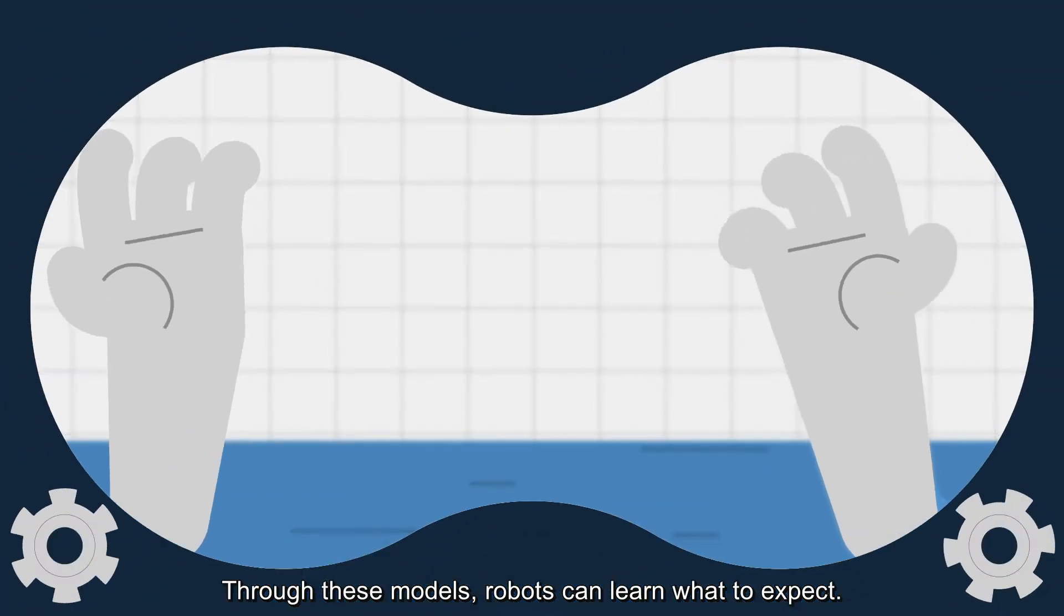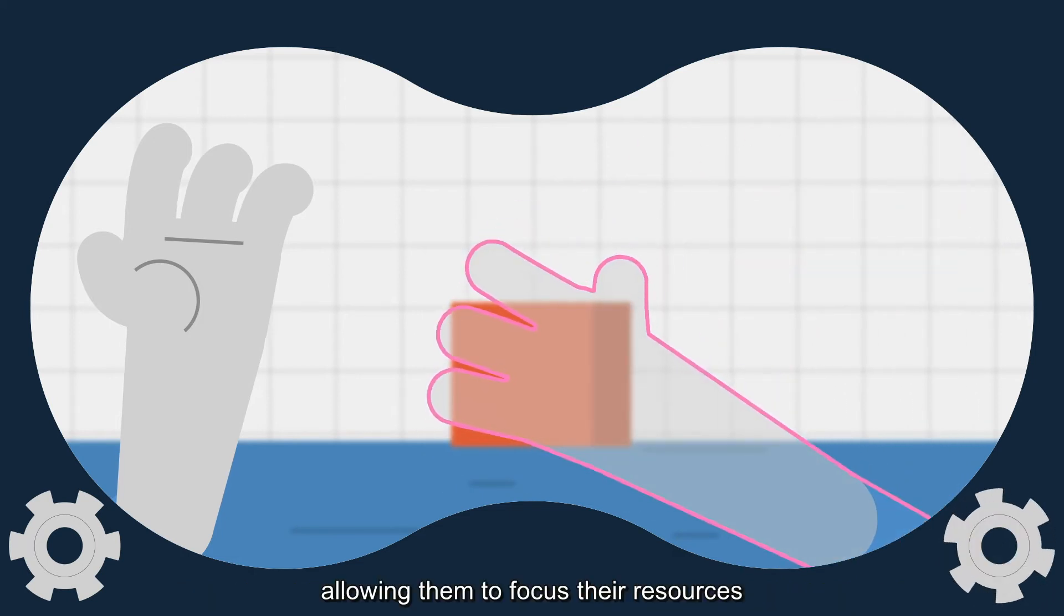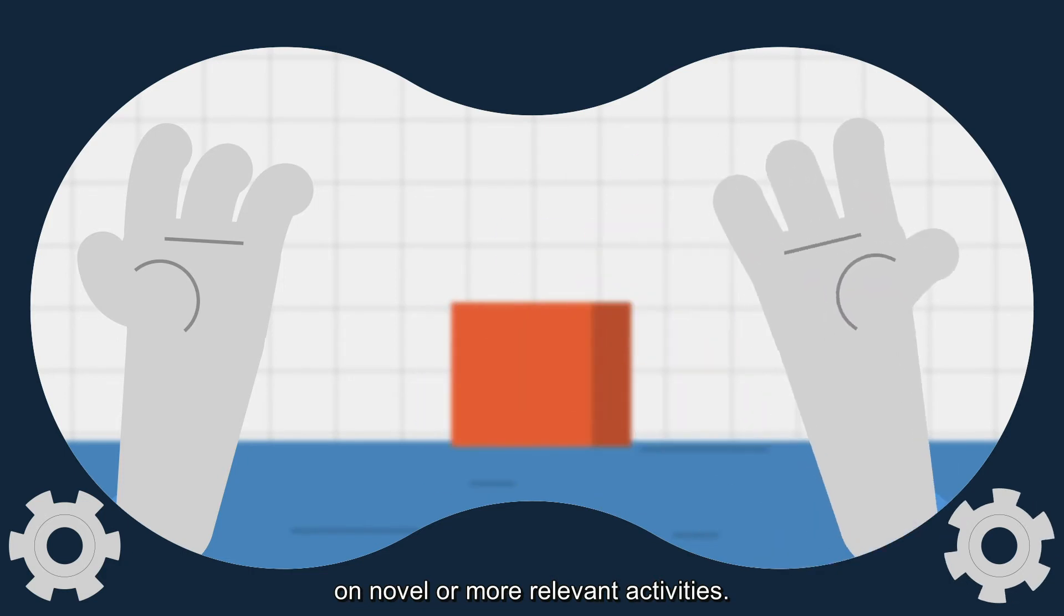Through these models, robots can learn what to expect. Expected information can be filtered out from incoming sensory data, allowing them to focus their resources on novel or more relevant activities.